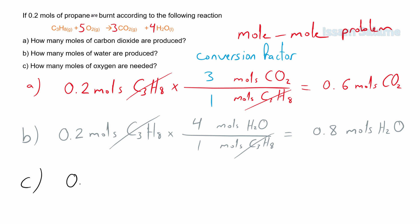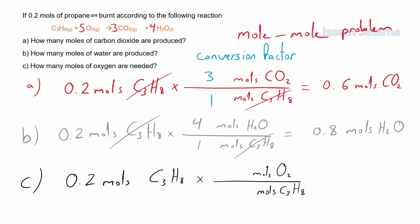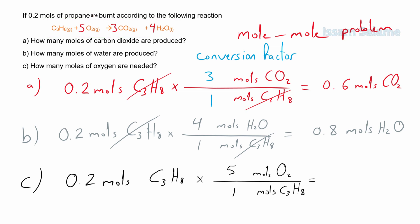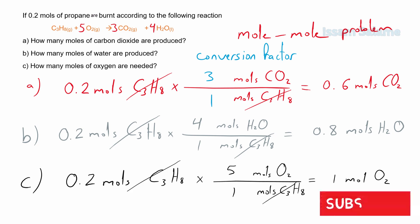For part C, with the same procedure: 0.2 moles of propane multiplied by a fraction — moles of propane in the denominator. Since they're asking about oxygen, we put moles of oxygen in the numerator. The coefficients from the balanced equation are 5 next to oxygen and 1 next to propane. We cancel the matching units and the answer is 1 mole of oxygen.